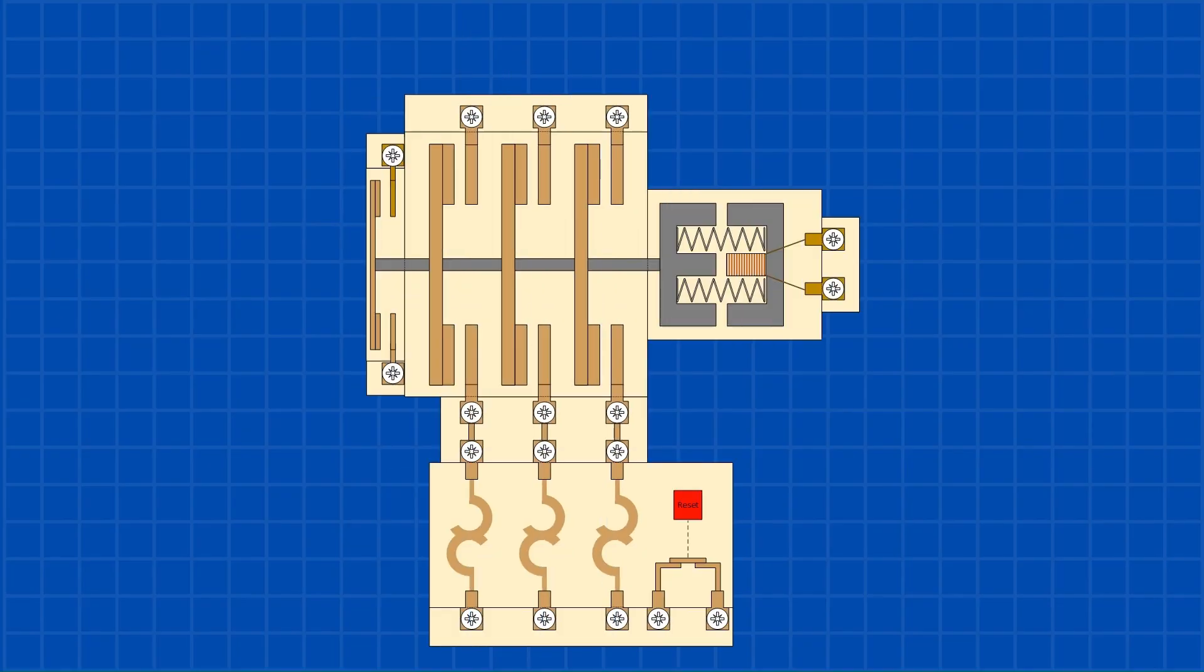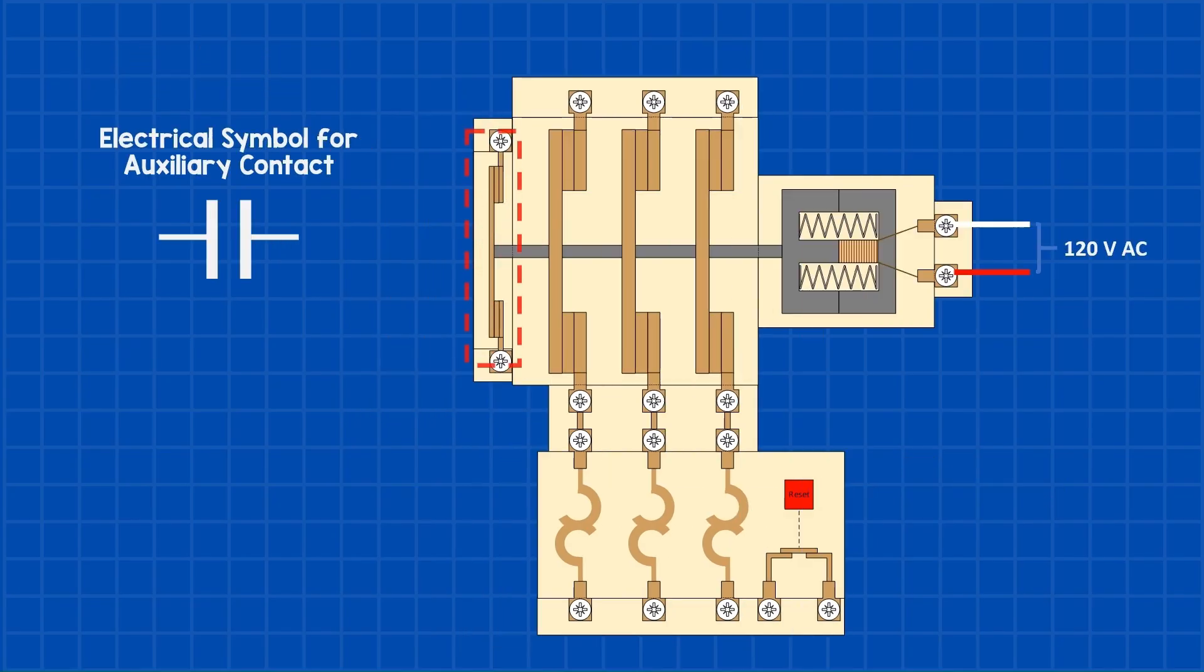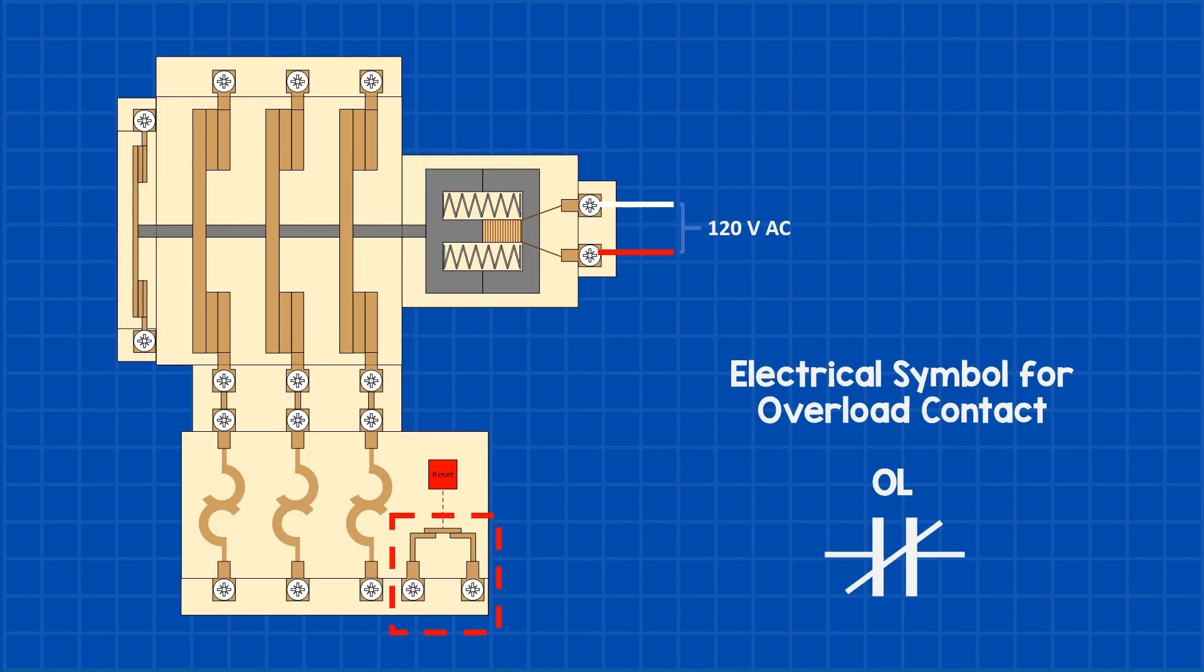Before we get into the 120 volt AC control side, we need to talk about two other components on the starter: the auxiliary contact and the overload contact. These will play a key role in the start-stop control circuit. The auxiliary contact is connected to the main contactor and closes at the same time. It's mainly used in the control circuit to show when the contactor is activated. It also helps latch the circuit, but I'll explain that in more detail when we get to the control circuit. An overload contact is a normally closed contact that opens when an overload occurs and needs to be manually reset using a reset button. In the control circuit, it disconnects the circuit when an overload is detected.